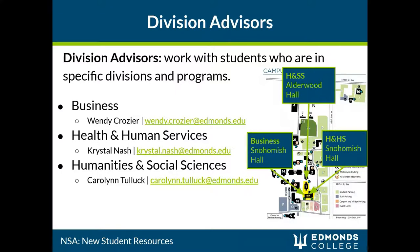Division advisors work with students who are in specific divisions and programs. We have three division advisors on campus. Wendy Crozier is in the business division, located in Snohomish Hall. Crystal Nash is in the health and human services division, also located in Snohomish Hall. Carolyn Tullock is in the humanities and social sciences division, located in Alderwood Hall. In addition to general advising, division advisors develop ongoing relationships with students discussing long-term course progression and future plans for transfer or career.